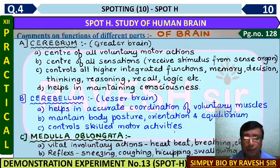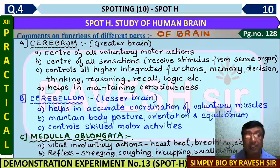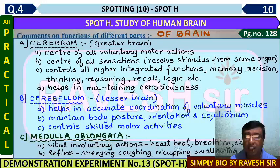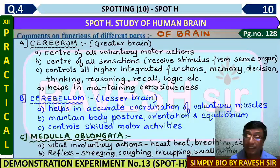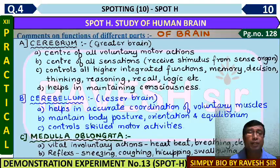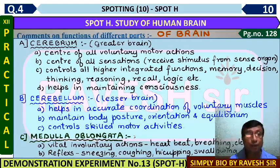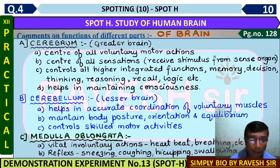The third part seen externally is the medulla oblongata. It is the vital involuntary action center - heart beat, breathing. It is the most important part of the brain. If the activity stops, someone can die, so a slight injury is very serious. It also controls reflexes like sneezing, coughing, hiccuping, and swallowing. These are the main functions of the medulla oblongata, which you can also write in the board examination.